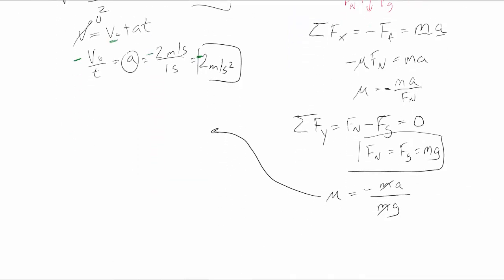Okay. So, going back over here, now that I've got our minus signs correct, we have minus mu times, sorry, minus the acceleration, which is minus 2 meters per second squared, divided by gravity, which is just 9.8 meters per second squared. Or, we could just call it 10 for the sake of this calculation. And, so, we get 2 divided by 10 or that the coefficient of friction is 0.2. And, that's our answer.